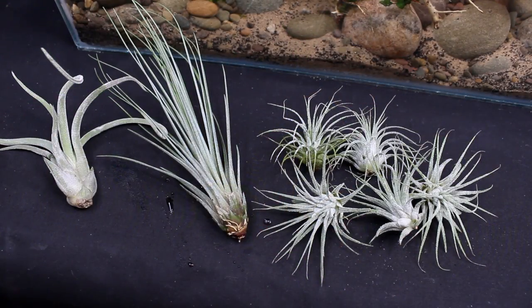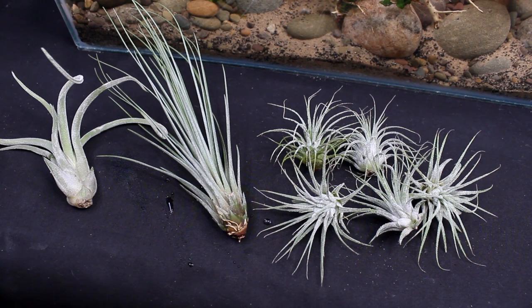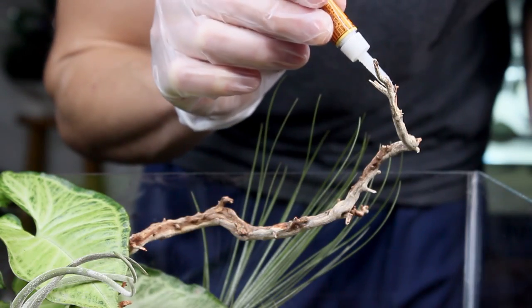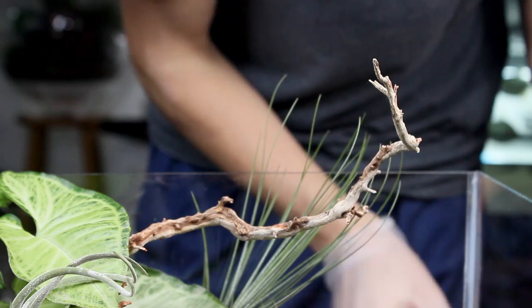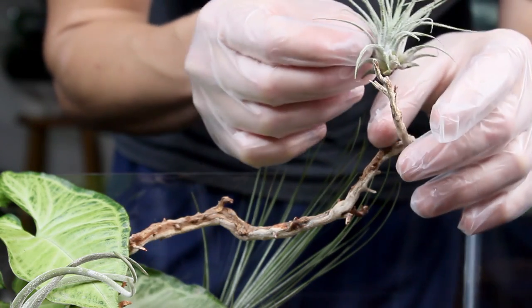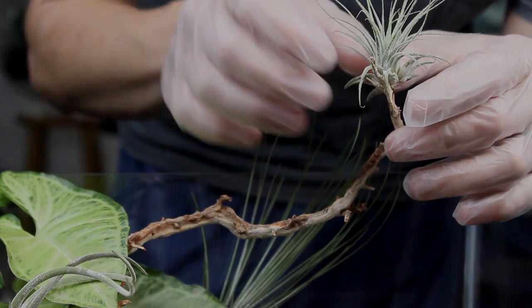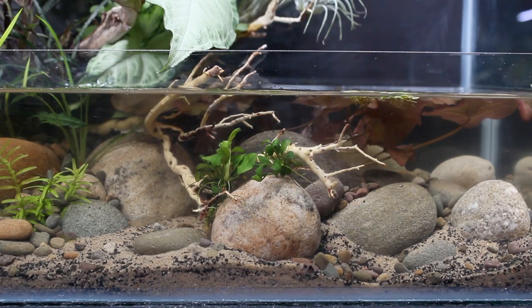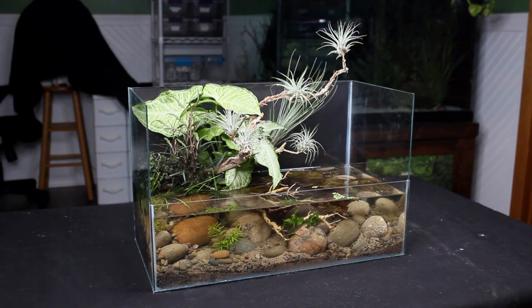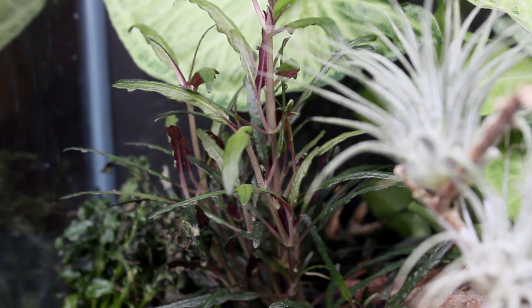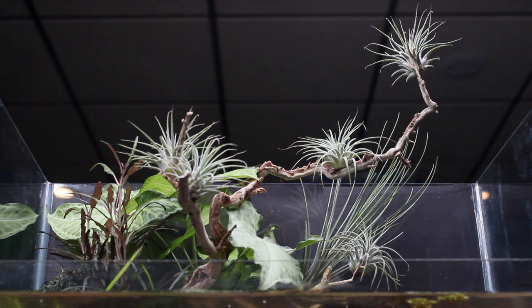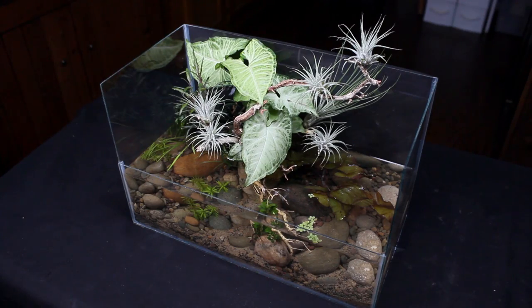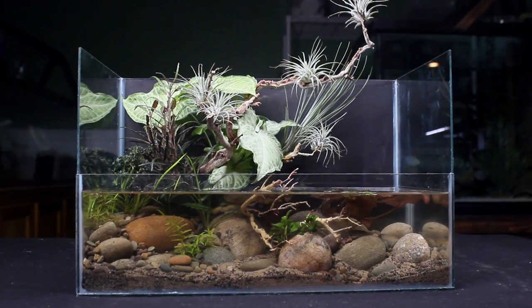To complete the planting for this video I picked up a few Tillandsia. These were simply super glued onto the wood. And that's the final product. I really like how it turned out and I'm glad that the glass cracked earlier on. Otherwise I probably wouldn't have redesigned the tank in this way.